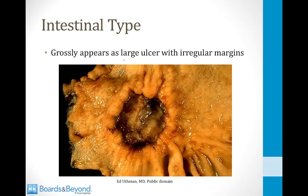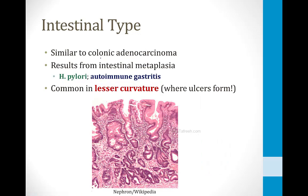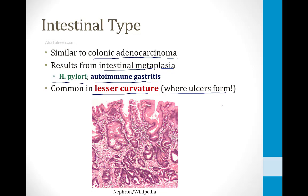The intestinal type of stomach cancer looks like a large ulcer with irregular margins — a very concerning finding on endoscopy. This type is similar to adenocarcinoma of the colon and results from intestinal metaplasia. It can occur in response to H. pylori infection or autoimmune gastritis. It is common in the lesser curvature of the stomach, which is also where ulcers form, making it easy to remember.